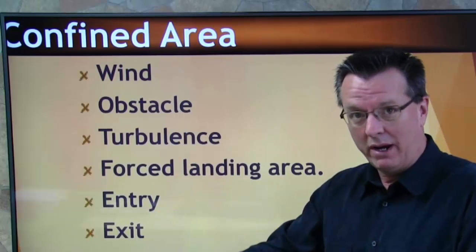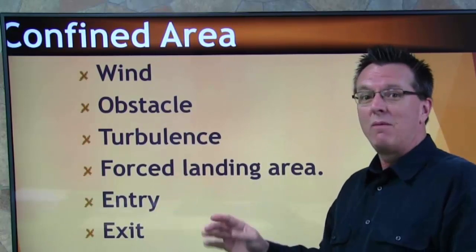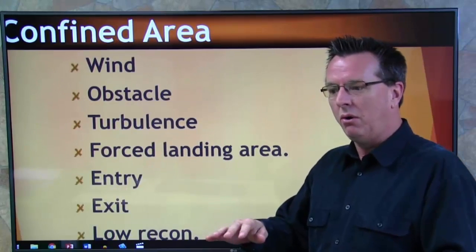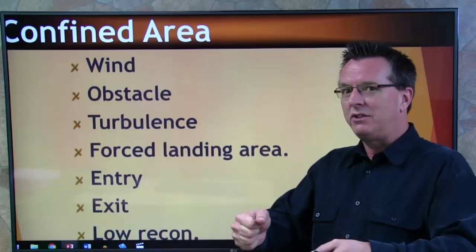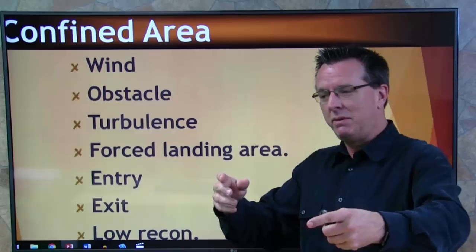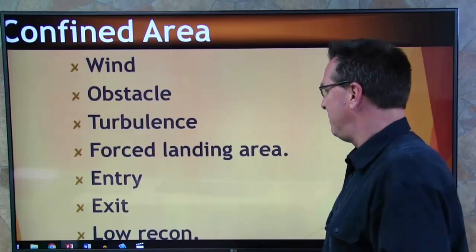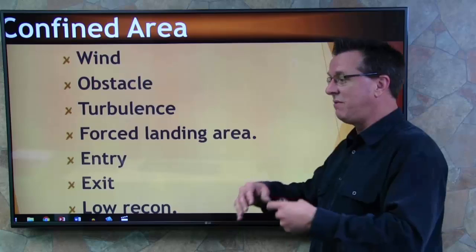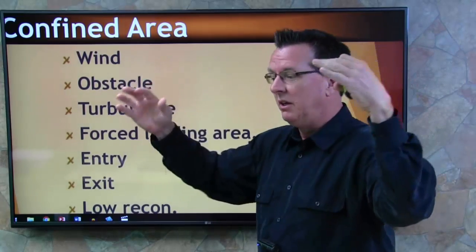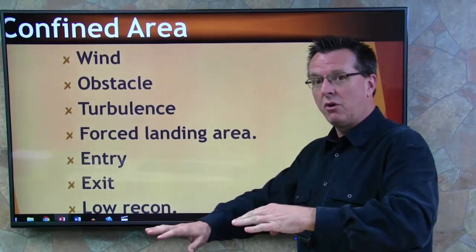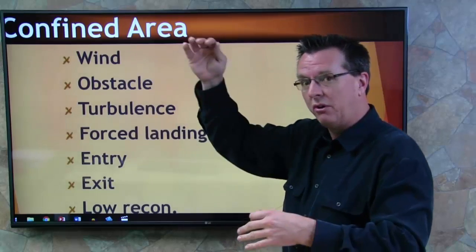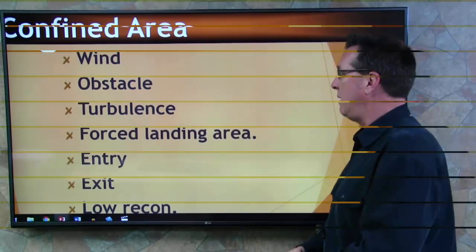Where am I going to go if I have a failure on the way in, and where am I going to go if I have a failure on the way out? It's very easy to get down in the hole and forget what's on the other side of the trees or buildings. And then low recon — that's just verifying what you see when you're up at 500 feet doing your circles, confirming everything looks the same at lower altitude with no surprises from your high recon.